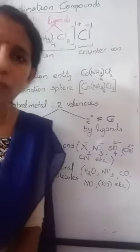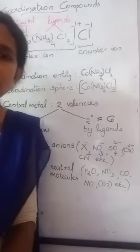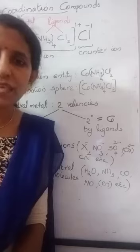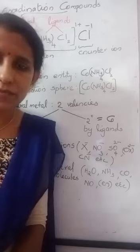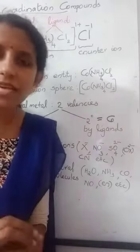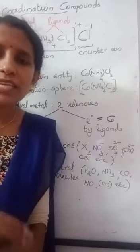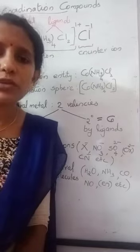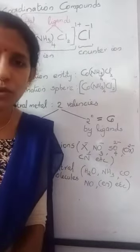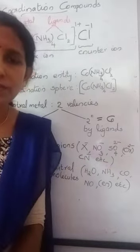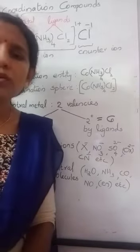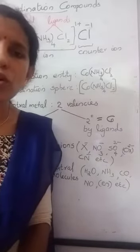Children, coordination compounds. Coordination compounds are formed by transition metals, D-block elements. These are compounds which contain a metal atom directly bonded to a fixed number of anions or neutral molecules. These coordination compounds are also called complex compounds.